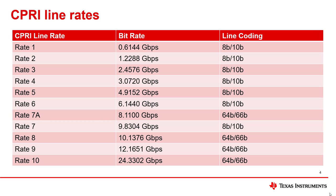One consideration is regarding the target CPRI rates for a CPRI system. CPRI has several different line rates spanning a wide range from 0.6144 gigabits per second to 24.3302 gigabits per second. These rates also have different line codings of either 8B10B, 64B10B, or 64B66B.